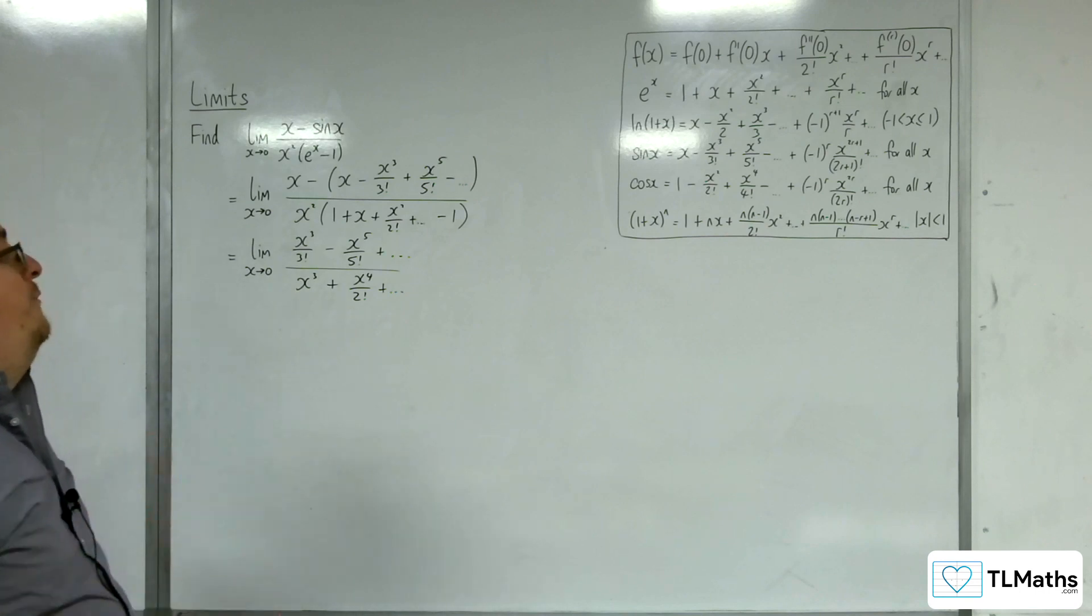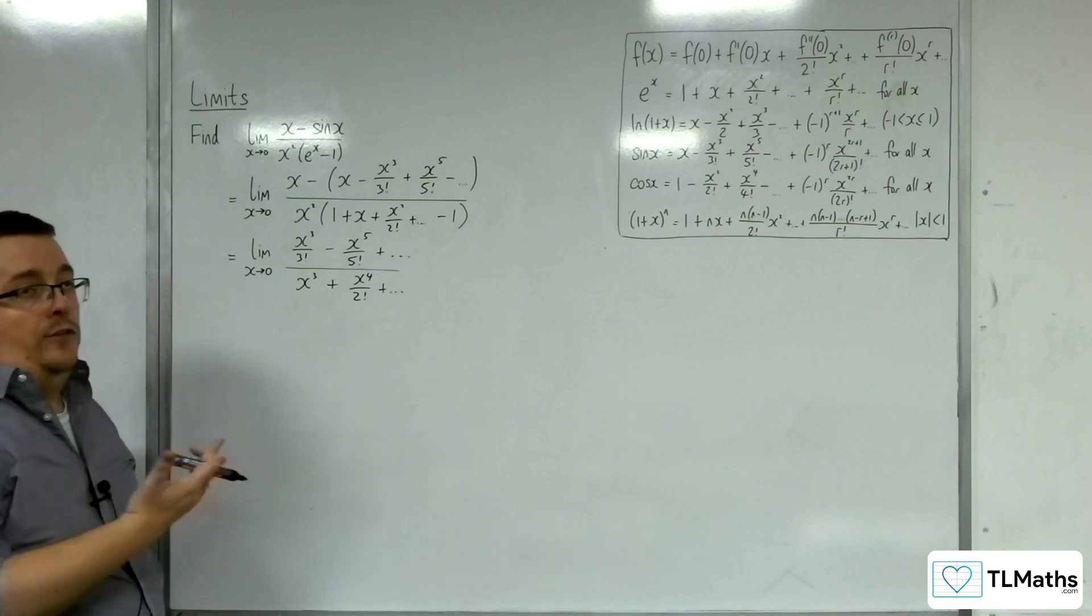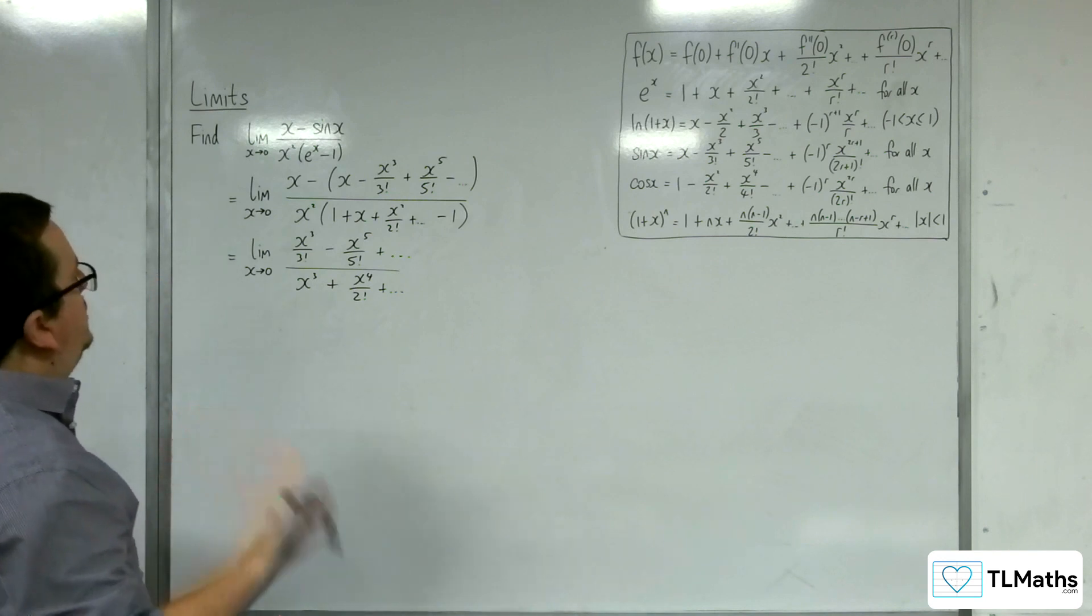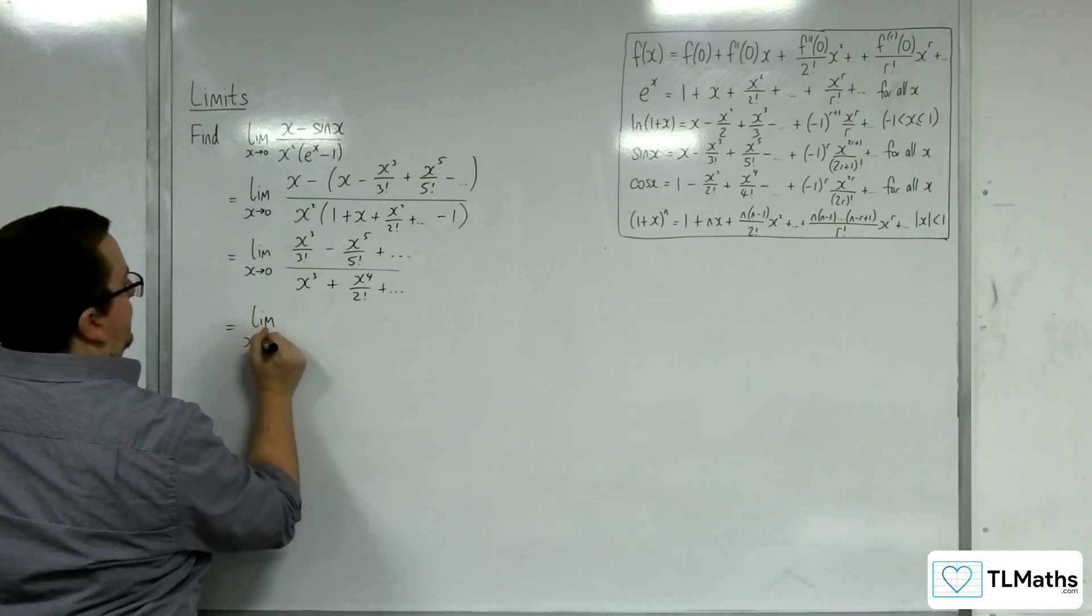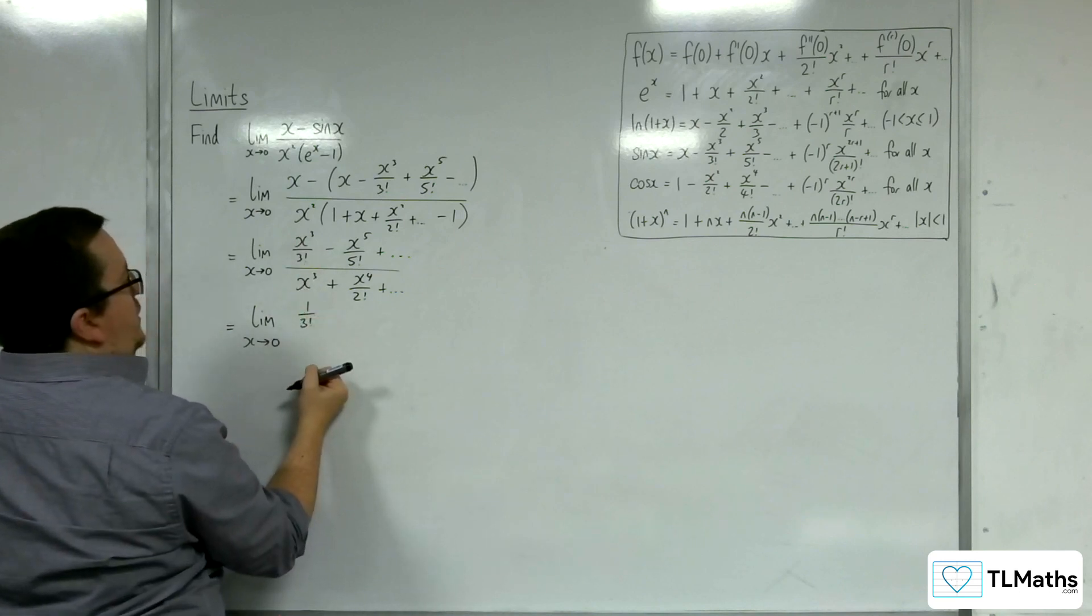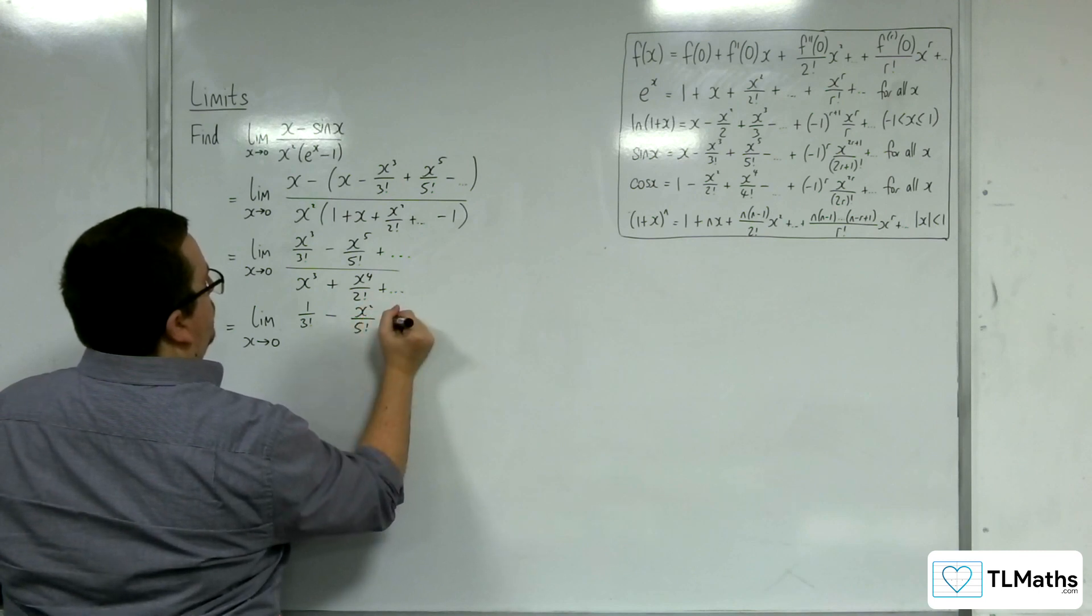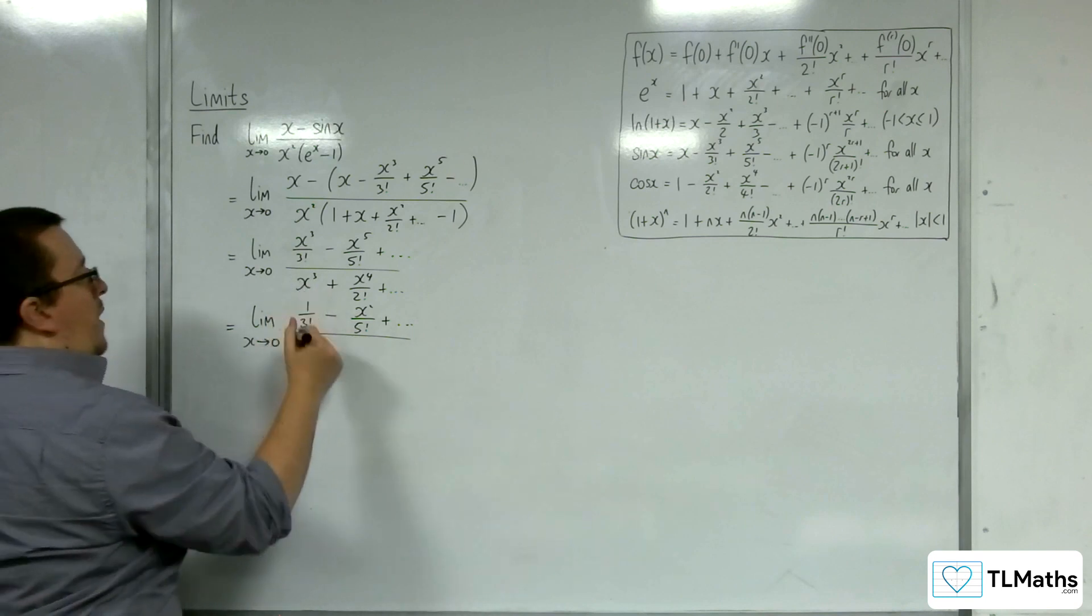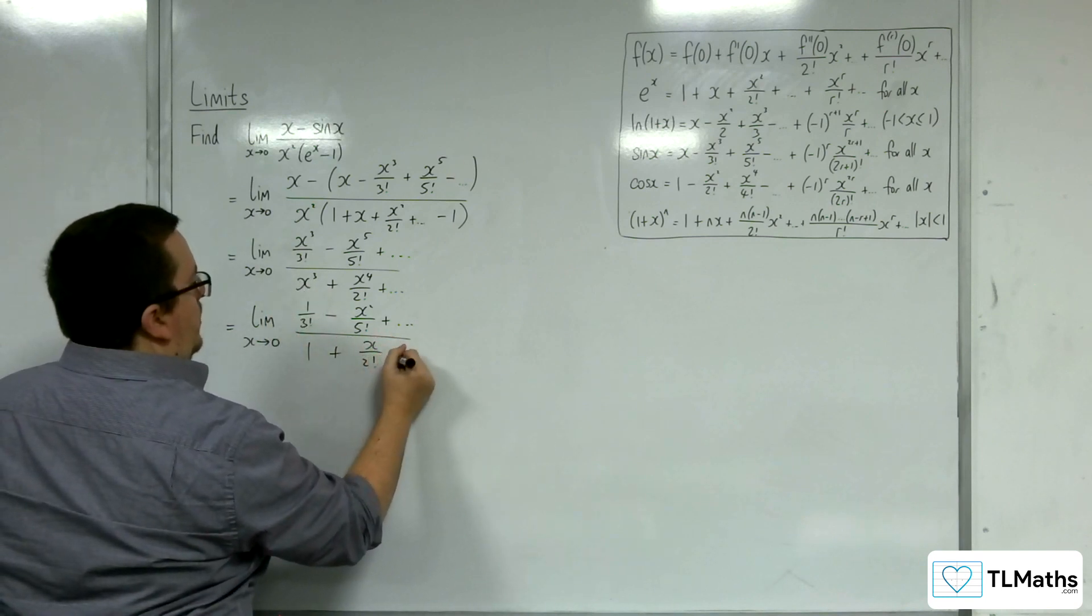Now, I can simplify this fraction by dividing top and bottom by x cubed. And what's going to happen is I'm going to get 1 over 3 factorial in the numerator, take away x squared over 5 factorial plus all the other terms. And in the denominator we've got 1 plus x over 2 factorial plus etc.